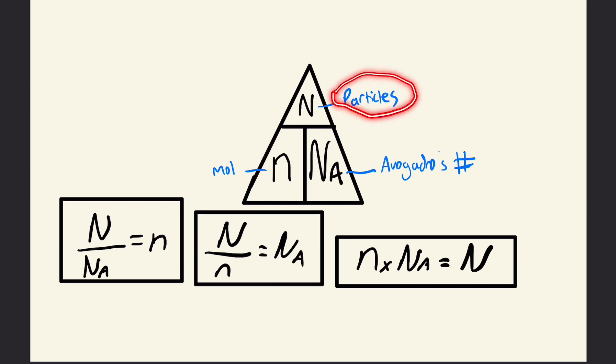If we divide the number of particles by Avogadro's number, we get the number of moles. If we divide the number of particles by the amount of moles, we end up with Avogadro's number, represented by this box.